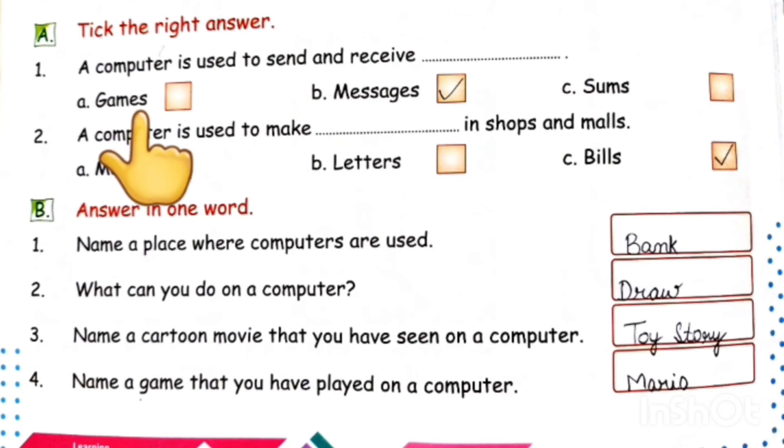Option A, games. Option B, messages. Option C, sums. Correct option A, messages. A computer is used to send and receive messages.